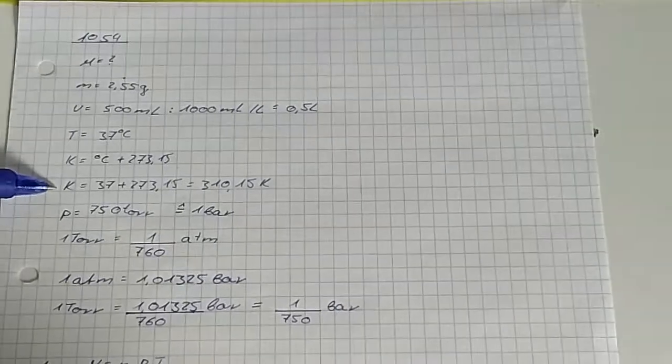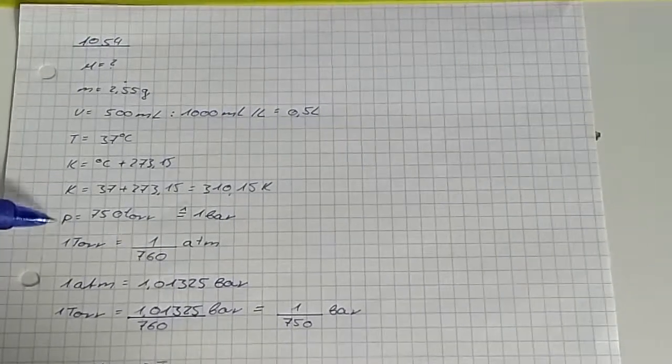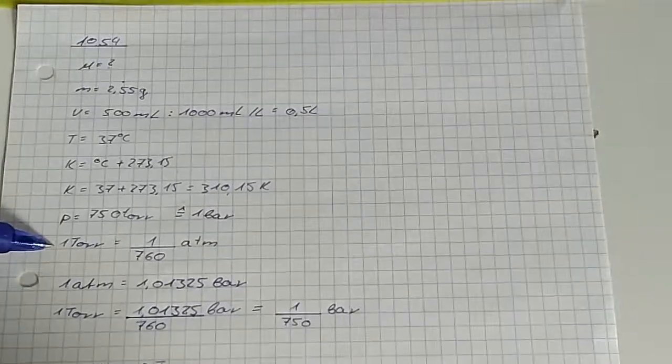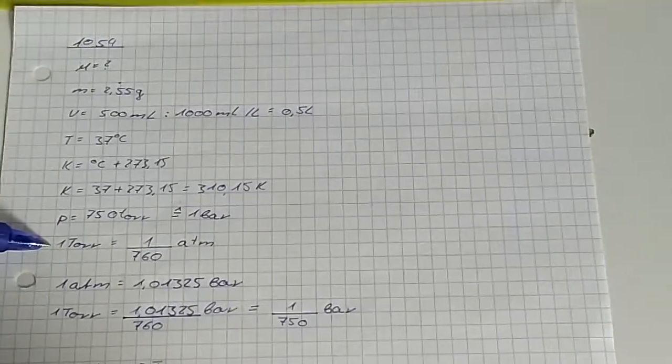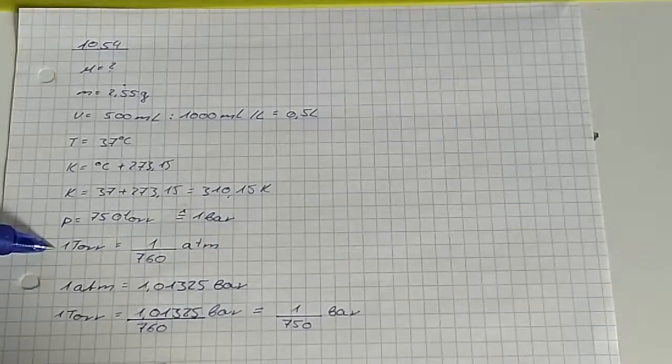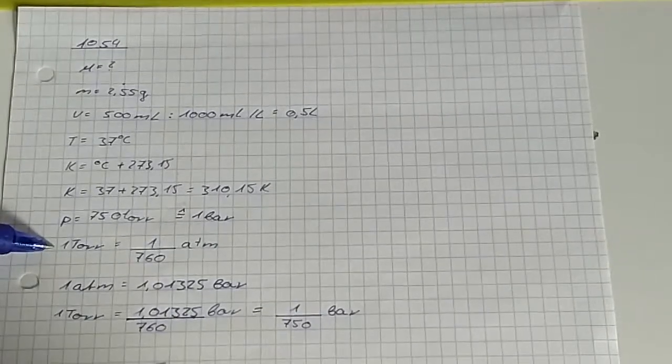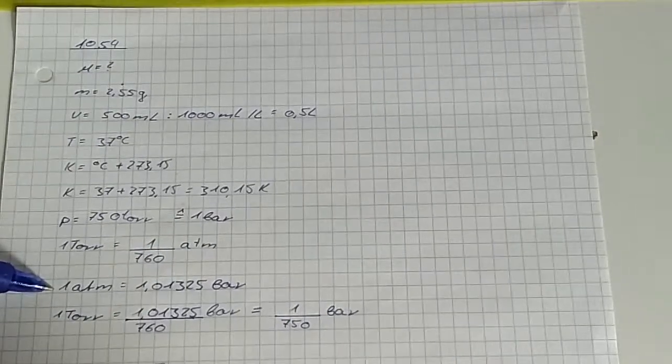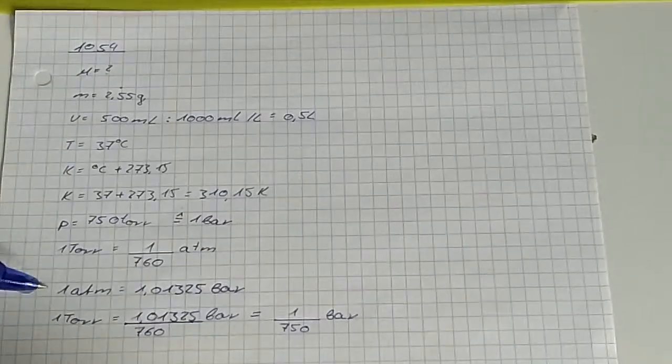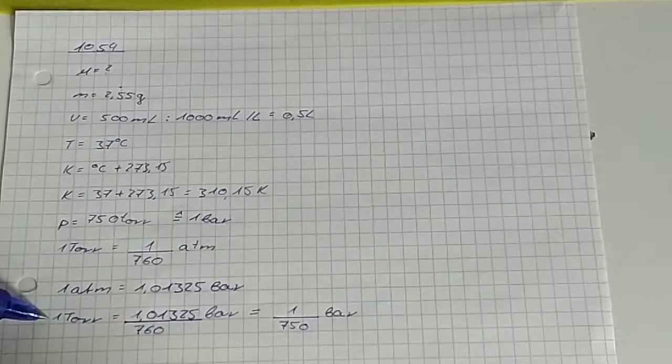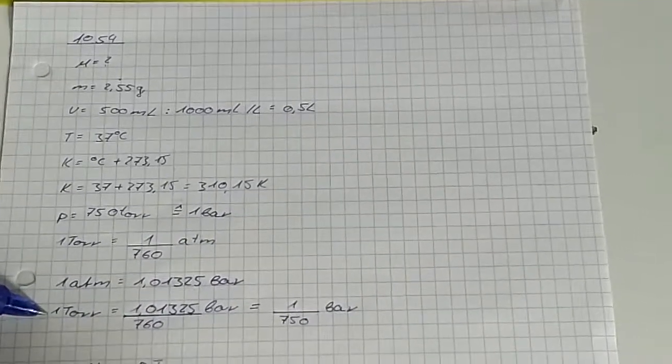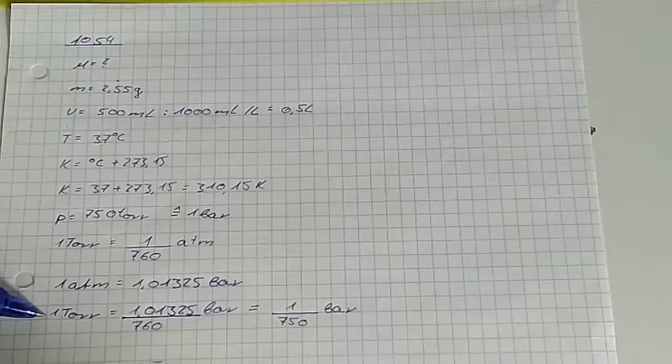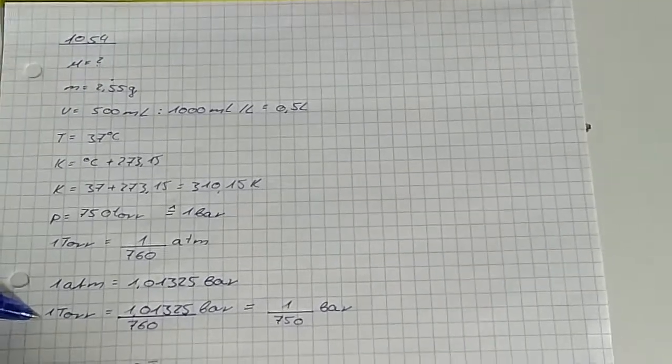The pressure is given in torr. 1 torr is equal to 1 divided by 760 atm. 1 atm is equal to 1.01325 bars. This is 1.01325 divided by 760 bars.